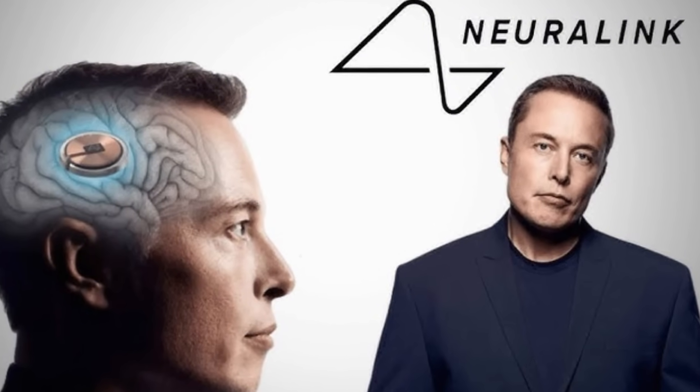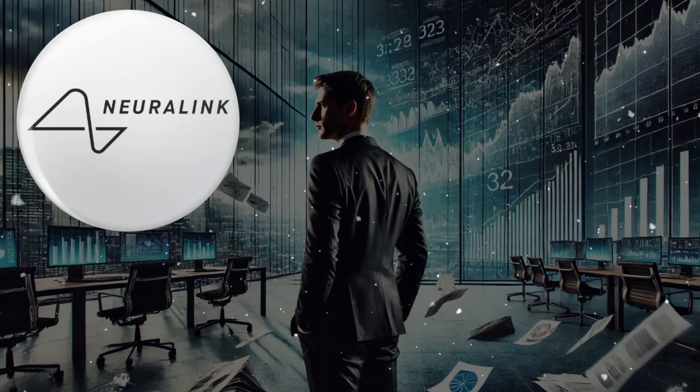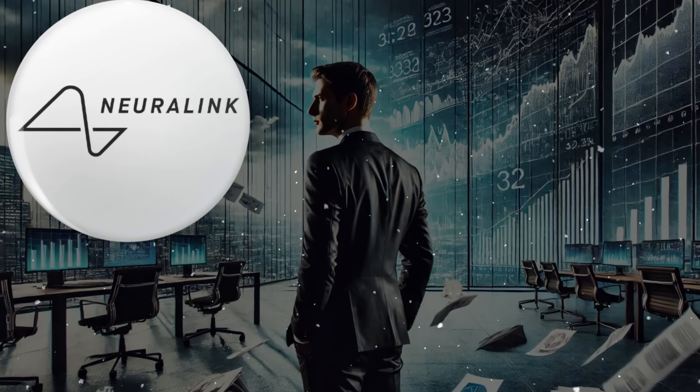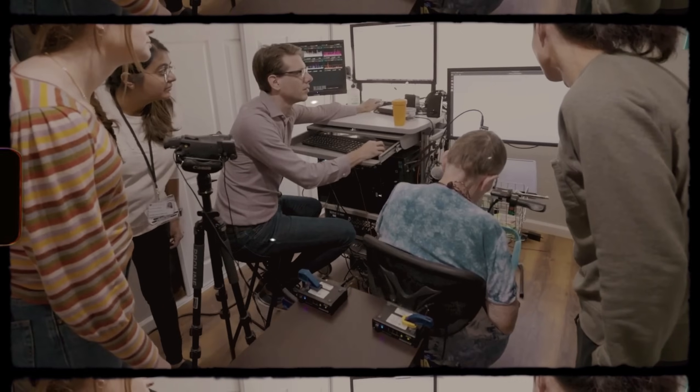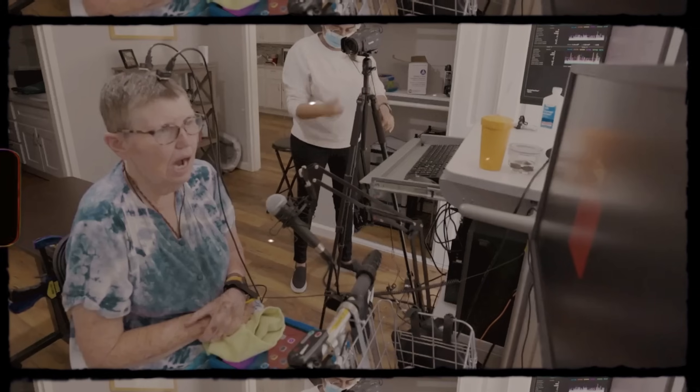Neuralink has had some big issues this year, including a lawsuit from a former employee who said the work environment was bad. They also faced criticism for how many animals were dying in their tests. As they try more experiments, they'll have to fix these problems and show that their chips can really help people.